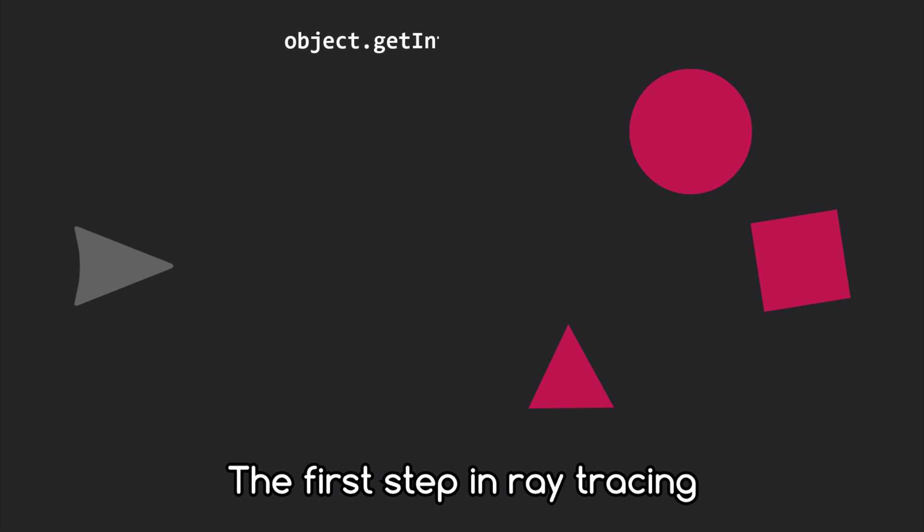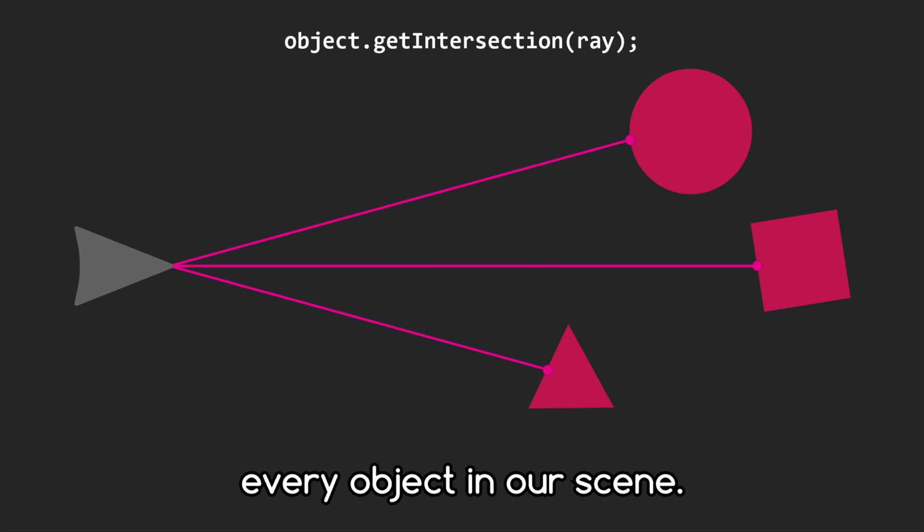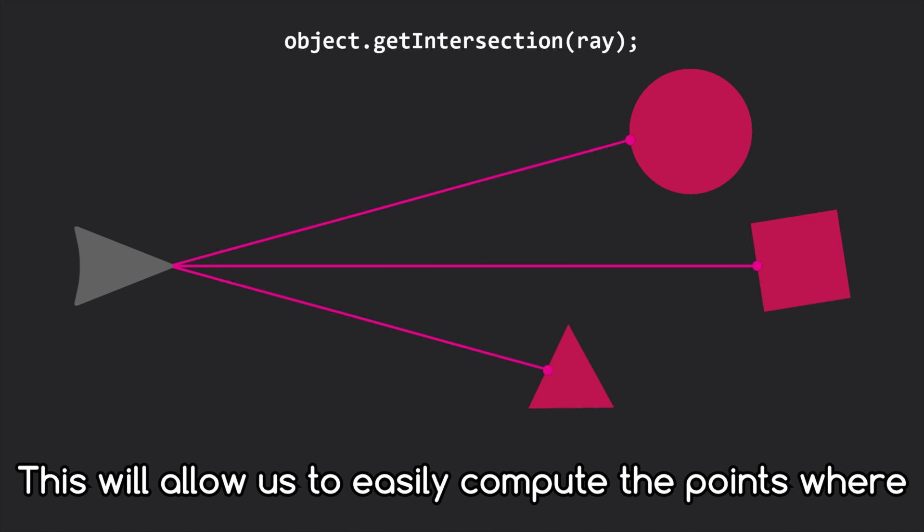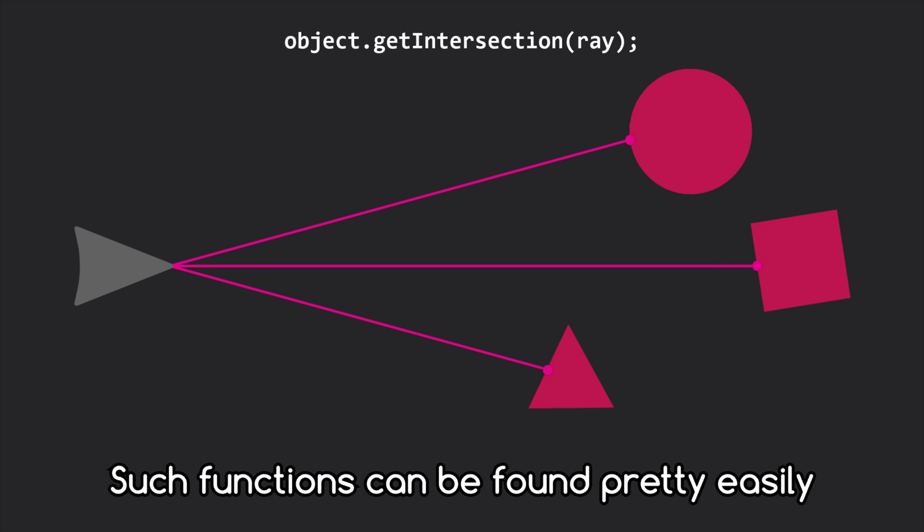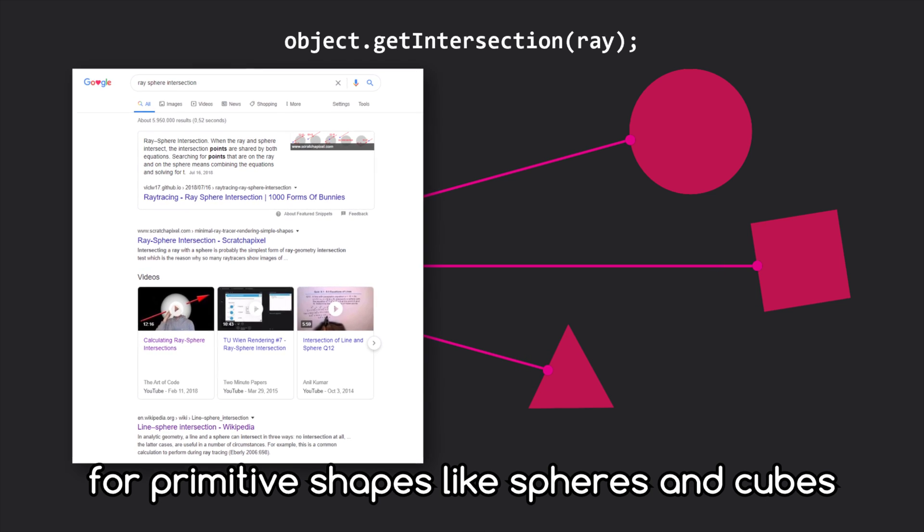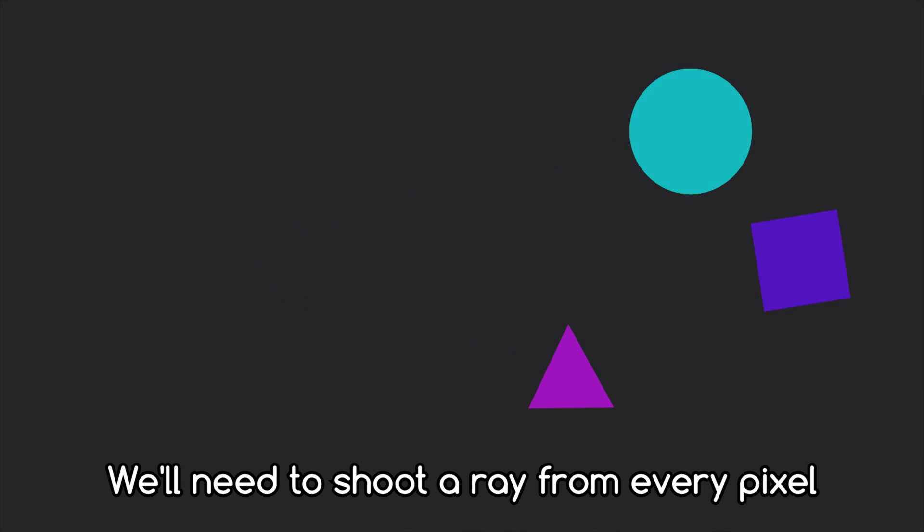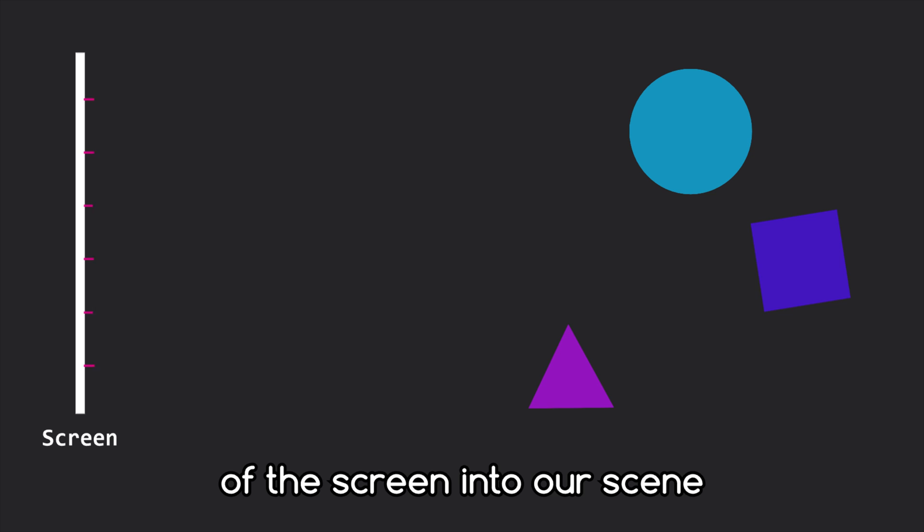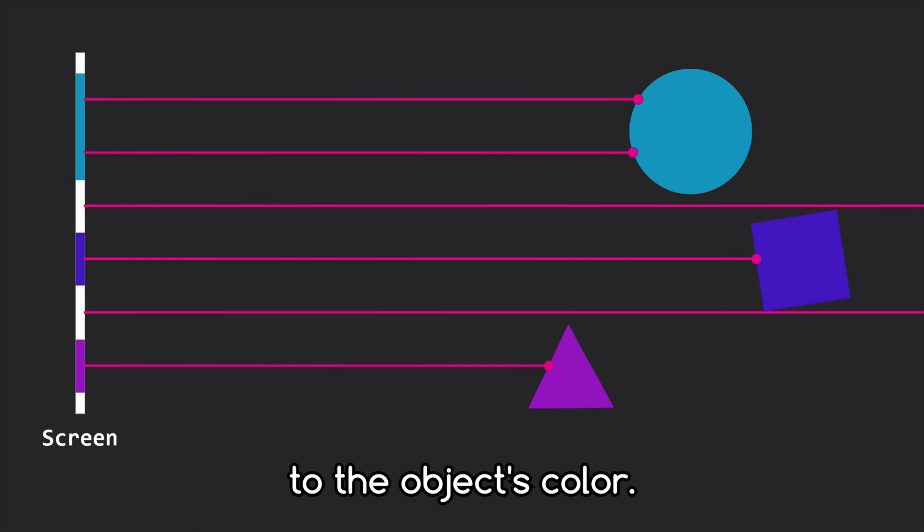The first step in ray tracing is to define an intersection function for every object in our scene. This will allow us to easily compute the points where a ray hits an object in 3D space. Such functions can be found pretty easily for primitive shapes like spheres and cubes. If a ray hits an object, we color that pixel according to the object's color.